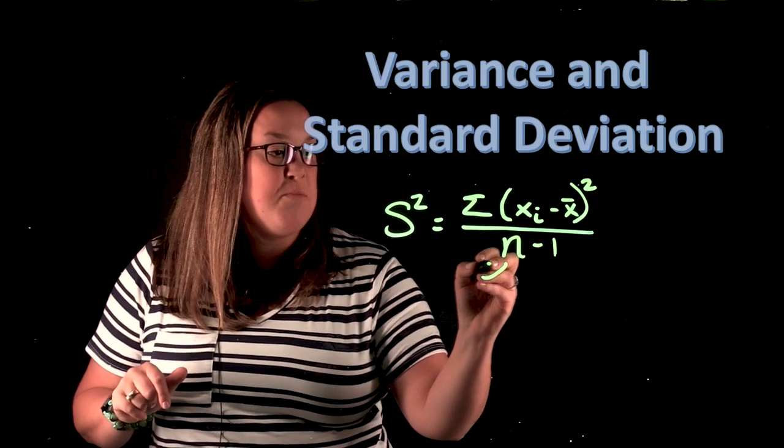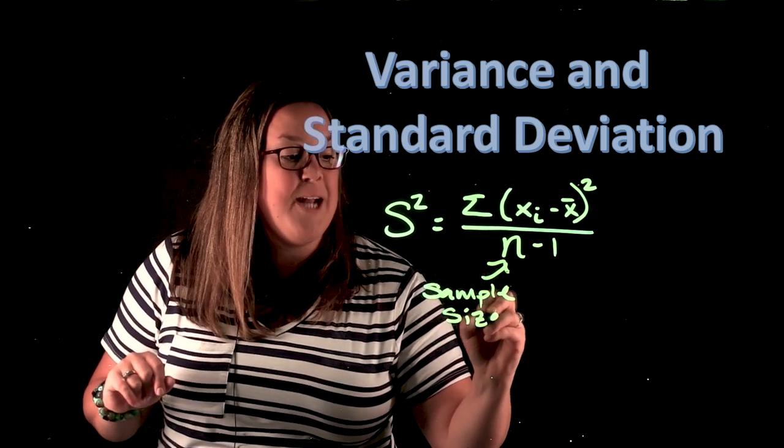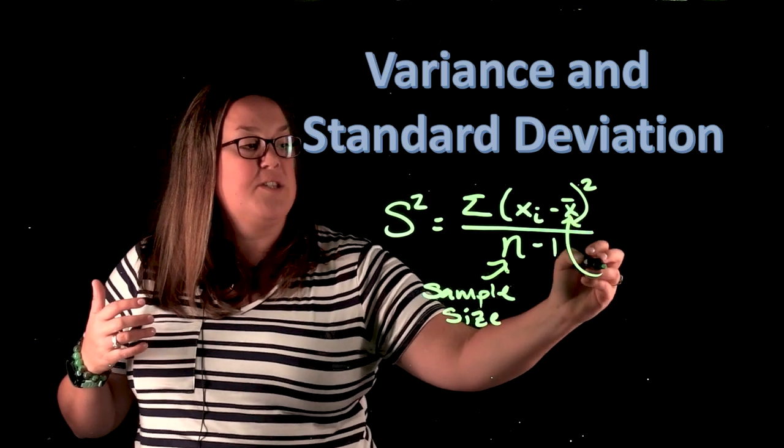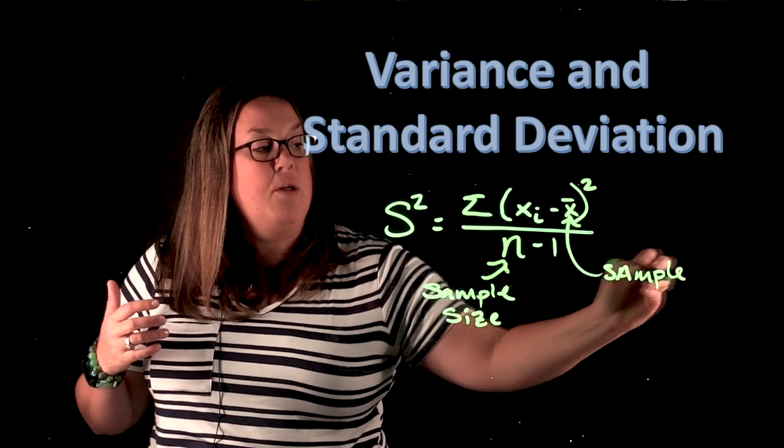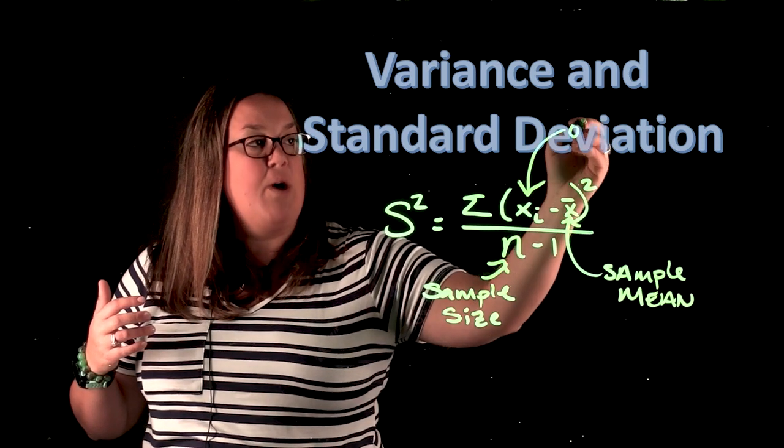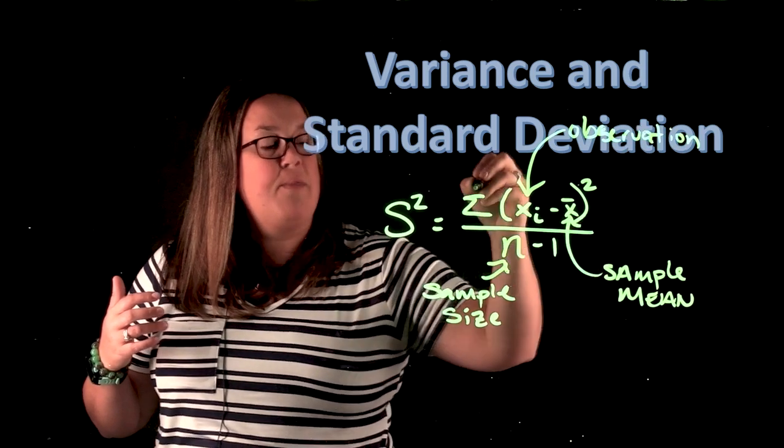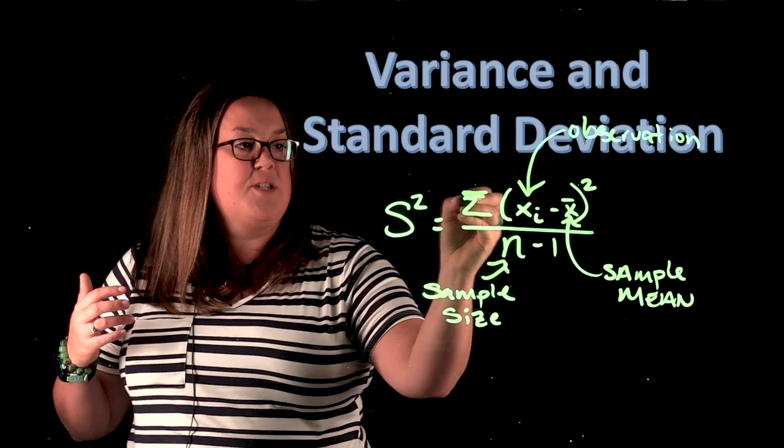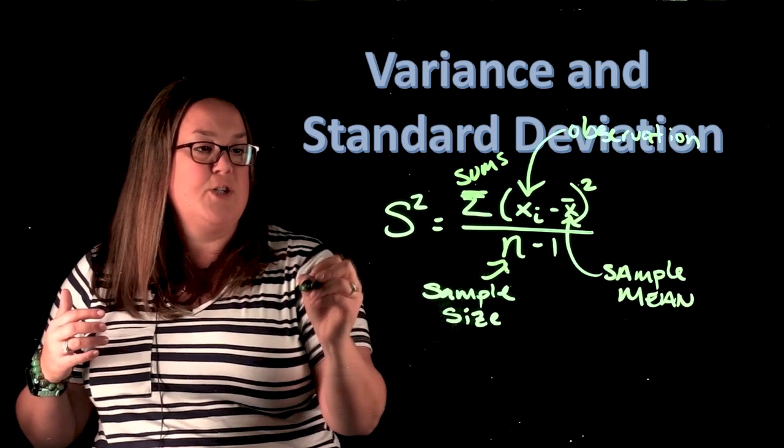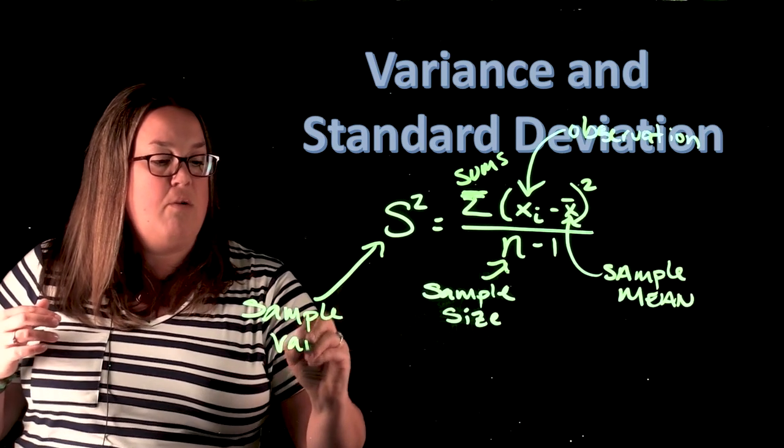So just some reminders of what these measurements are. N is going to be what we refer to as the sample size. Also remember that X bar is the notation for the sample mean. And then we have X sub i and that's just a fancy way of saying each observation. And then this sigma, remember that that's going to be summing. So that sums everything behind it. So we'll sum all of the deviations. And then this S squared is what we call sample variance.